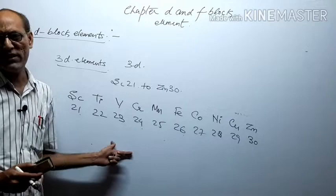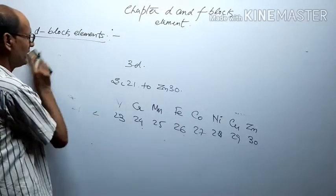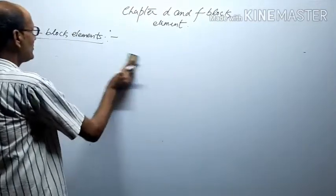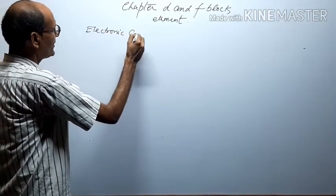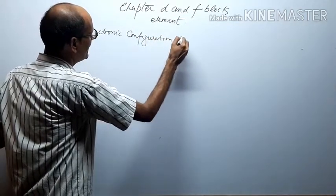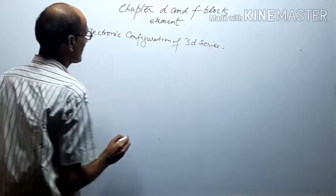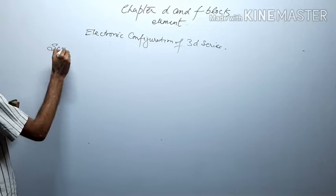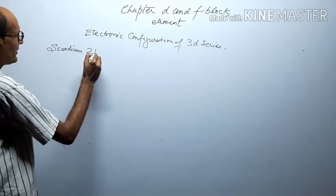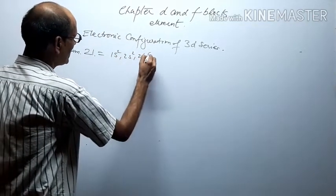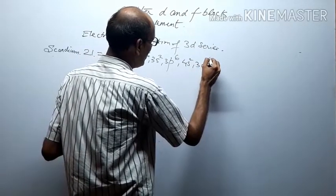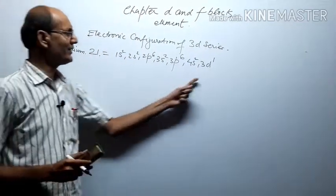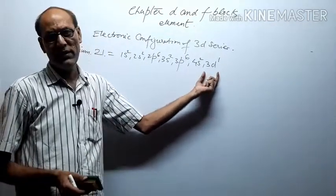Now moving towards the electronic configuration of the 3d series. In class 11 you learned how to write electronic configurations. The first element is scandium (21): 1s² 2s² 2p⁶ 3s² 3p⁶ 4s² 3d¹, or written as [Ar] 3d¹ 4s². You can see that one electron is unpaired, which is why it is called a transition element.